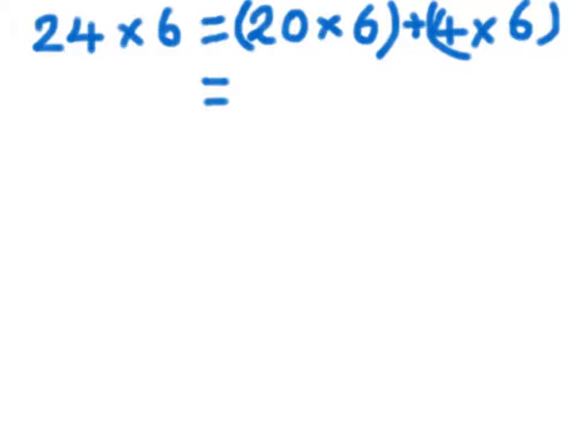So, next we carry out the multiplications. 20 times 6 is 120. Don't forget the plus. 4 times 6 is 24.